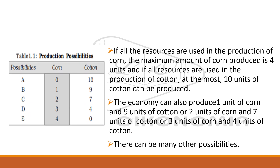If the society uses all its resources for corn production alone, the maximum corn produced is 4 units. If all resources are used for cotton, the maximum is 10 units with 0 corn. In between these two extremes, there are several other possibilities showing different combinations of corn and cotton.